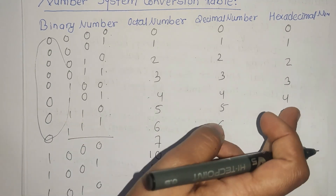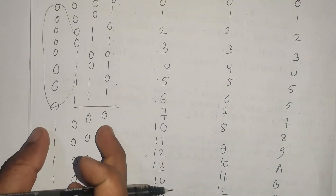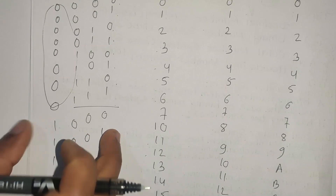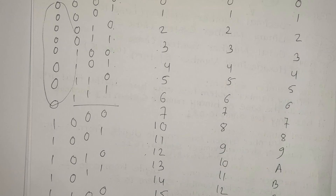In the decimal case, 4 digits form a number. So I am going to convert this number — this number is converted using the number system conversion table.